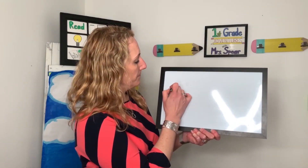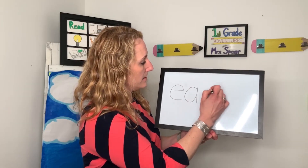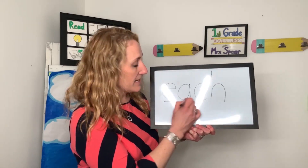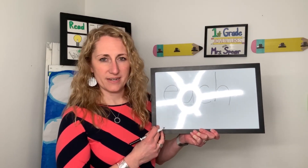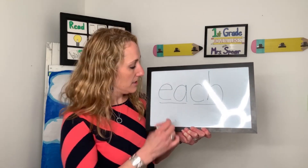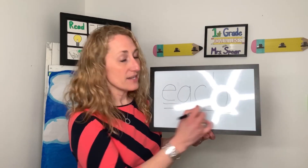The next word we're going to do together is the word each. What word? Great job. Here's the sounds that I hear in each: ee-ch. Each. There are two sounds in each, but there are actually four letters. E-a-c-h spells each. The e and a represent the ee sound in each, and the c and h represent the ch sound in each.